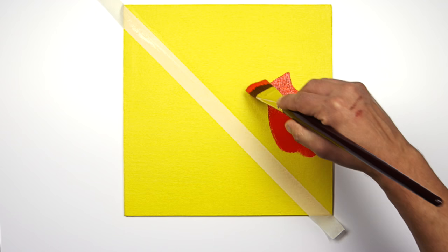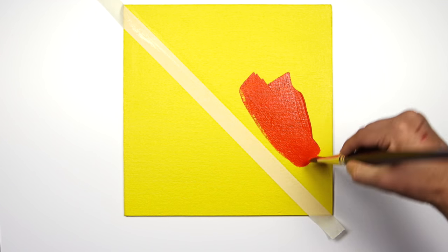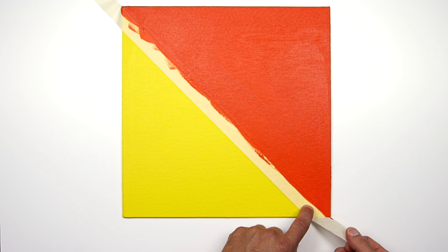Once the first color has dried, I'm applying a second color. Now that the paint has thoroughly dried—not just touch dry but completely dried—I'm going to remove the tape carefully.